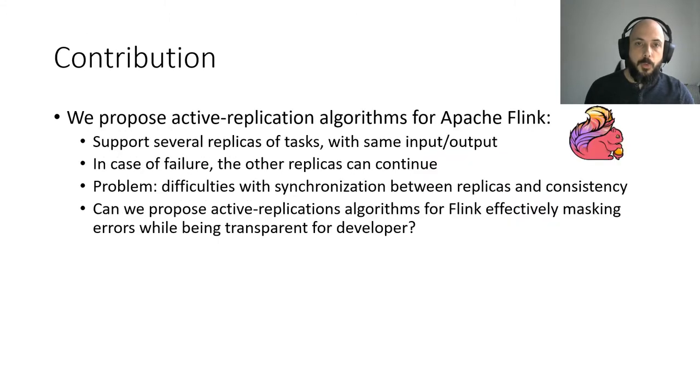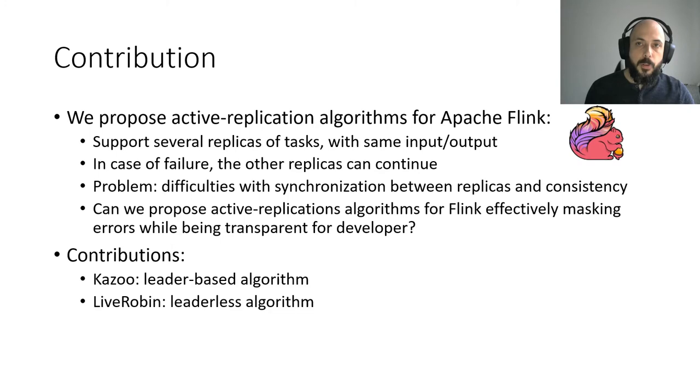We propose two additions to the passive replication algorithm in the Apache Flink stream processing engine. These algorithms are based on active replication, meaning that we will support several concurrent replicas of each task. In this manner, the processing can continue to process data even if one of the tasks fails. The problem here is that the synchronization between the replicas and the assurance of consistency of the processing is not easy. We propose two algorithms to harness this problem: Kazoo, a leader-based algorithm, and LiveRobin, a leaderless algorithm.